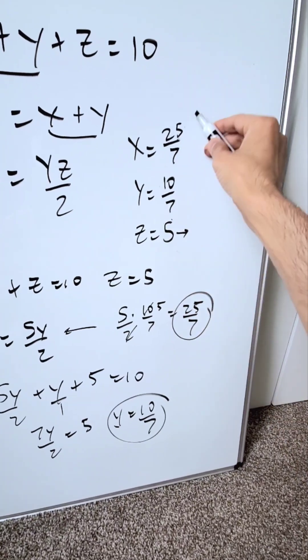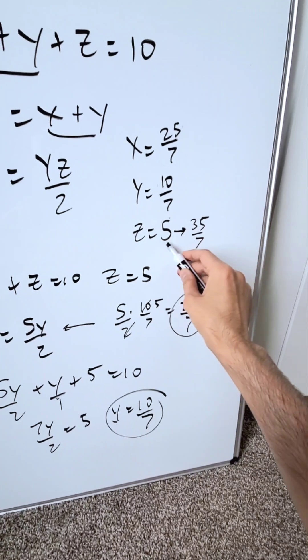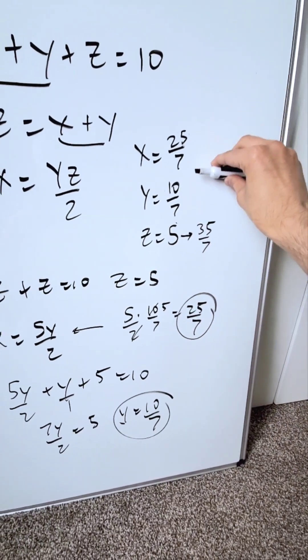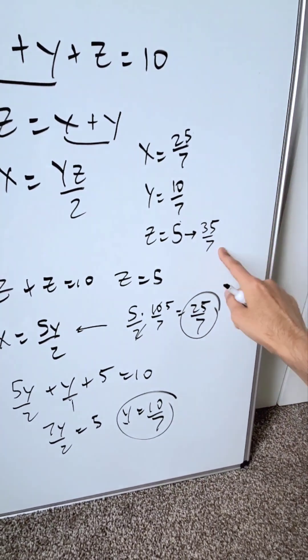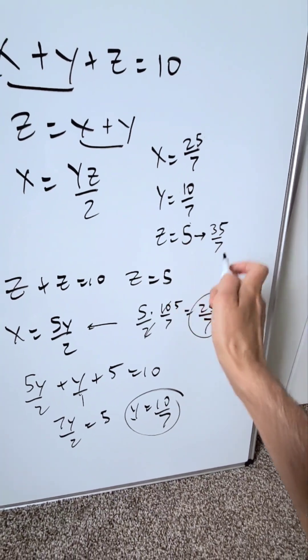We can write this in a standard uniform format by saying 35 over 7, which is equal to 5. x is equal to 25 over 7, y is equal to 10 over 7, and z is equal to 35 over 7 or 5. These will be your correct answers.